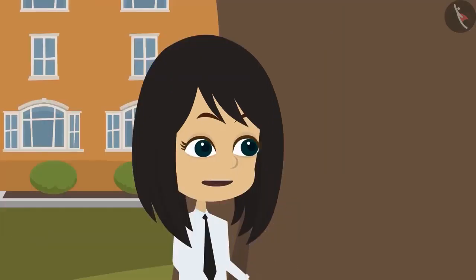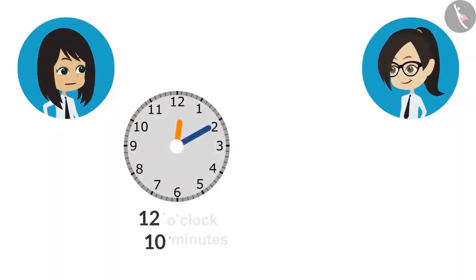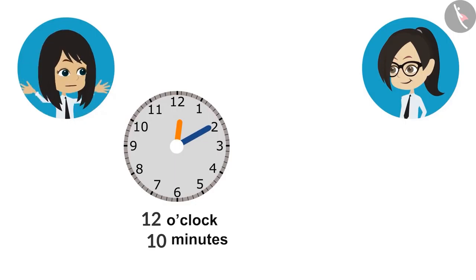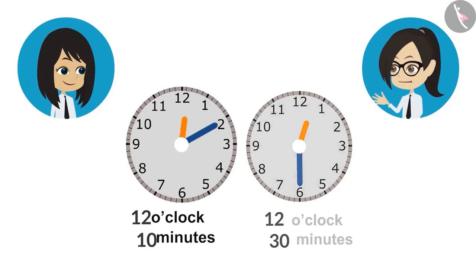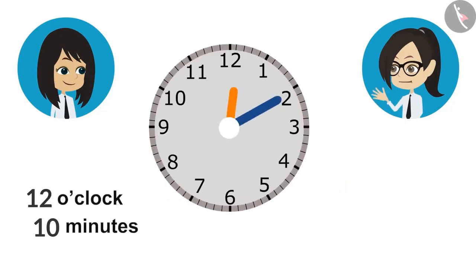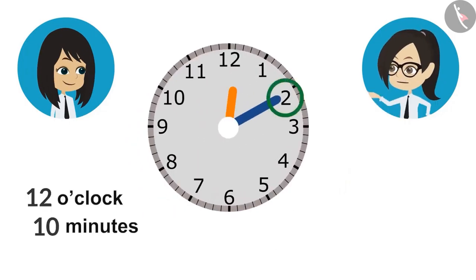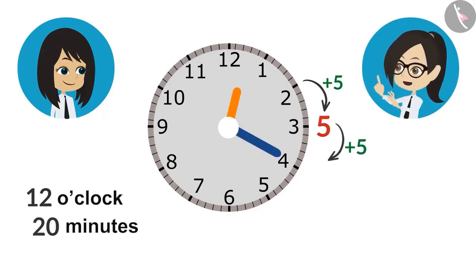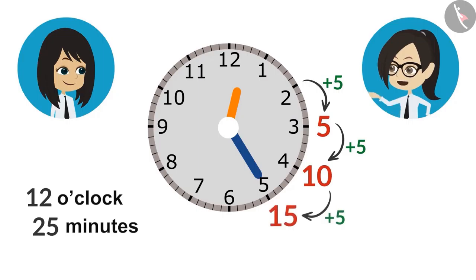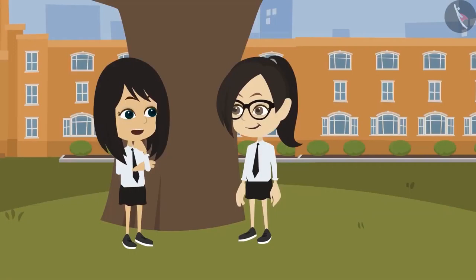Come, let us draw them first. So this is the start time of our break, and this is the end time of our lunch break. Now look, the minute hand is at 2. From here to 3, we will count 5 minutes. Till 4, it will be 10. Just like that, 15, 20. This means our lunch break gets over in 20 minutes.